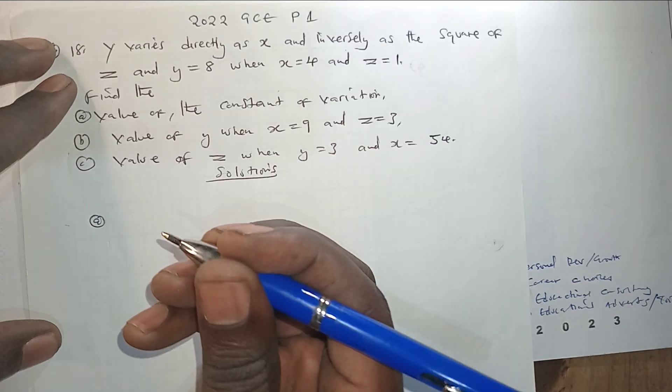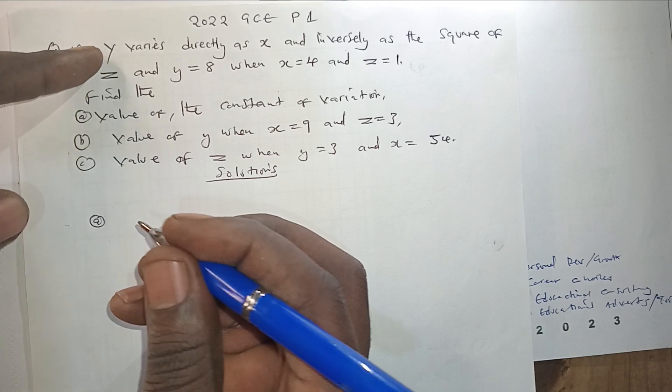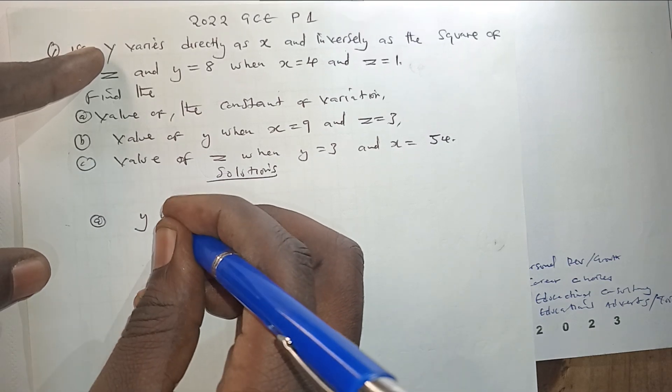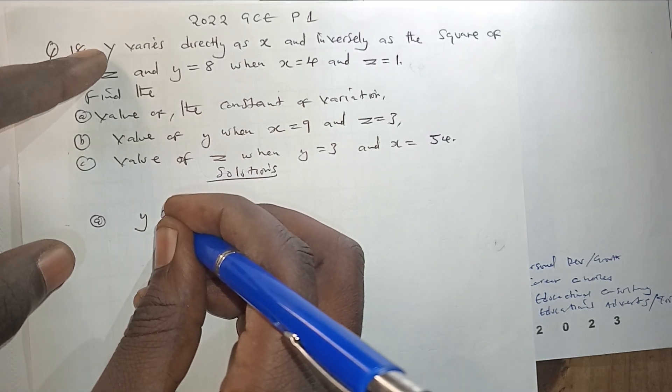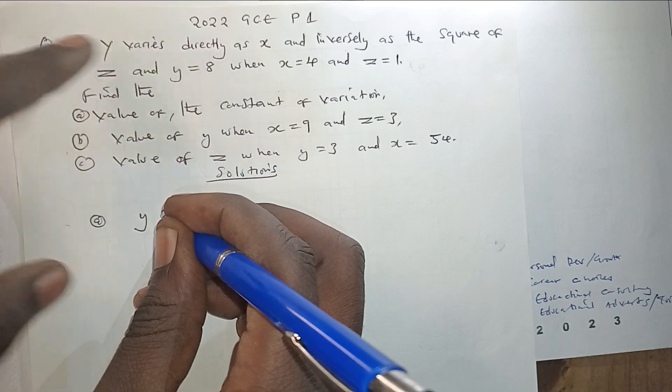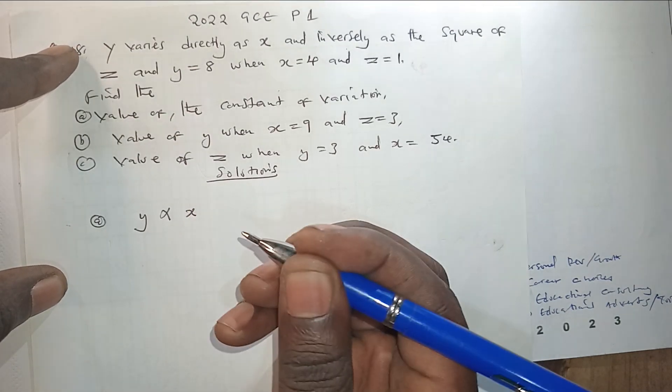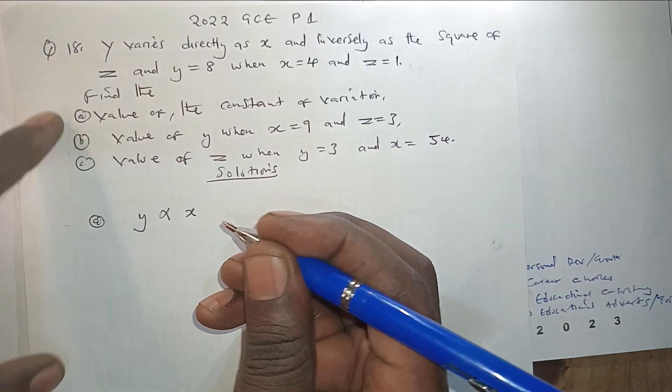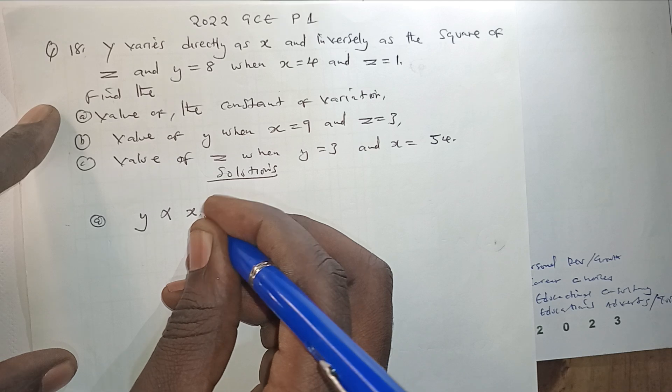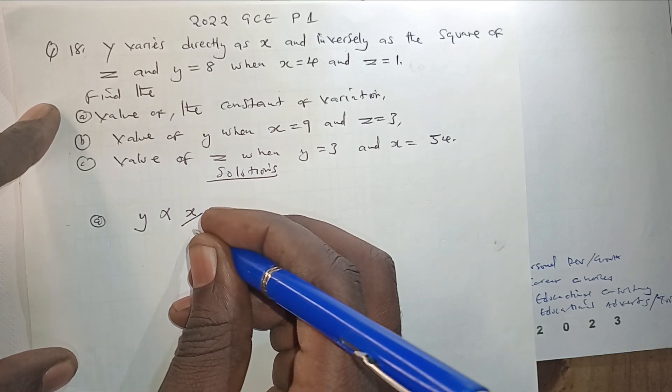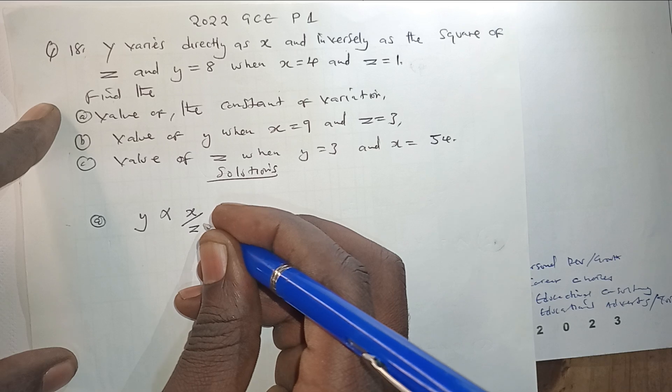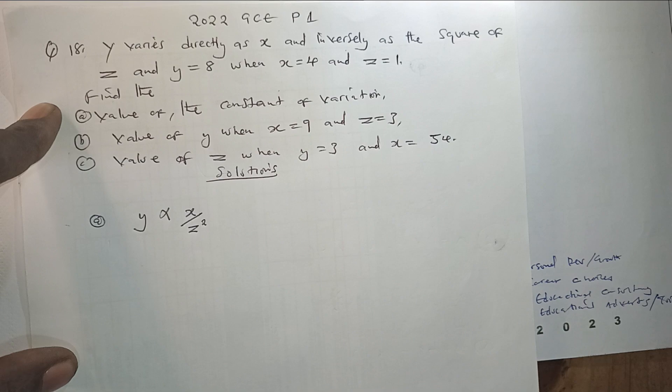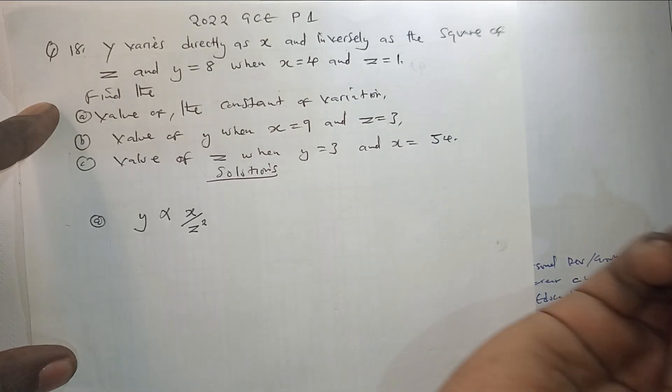We are going to form the equation of variation which is going to be Y varies directly as X. So directly as X is going to be like this. And this same Y varies inversely or indirectly as the square of Z. So we are going to put Z down here as the square of Z in this order.